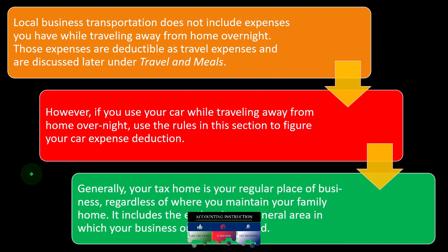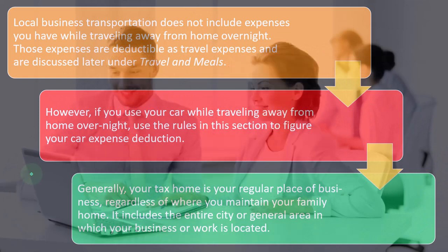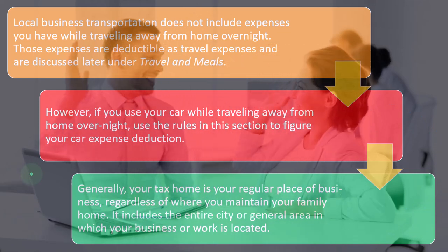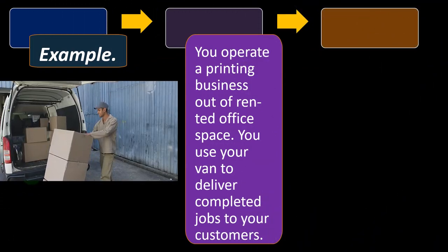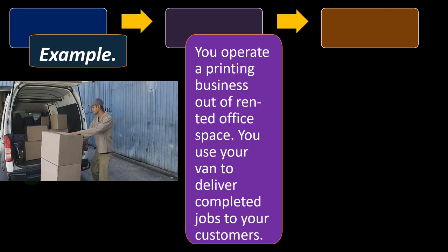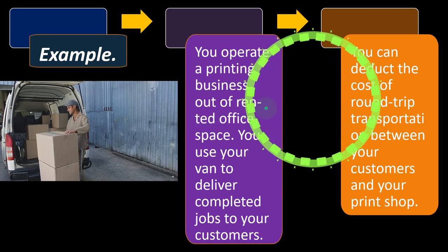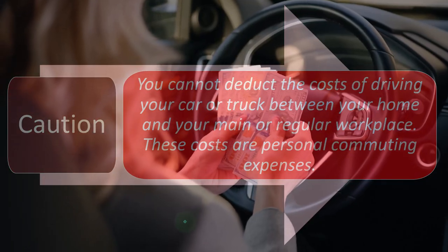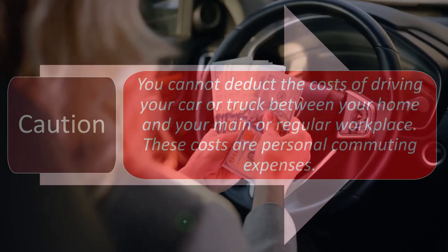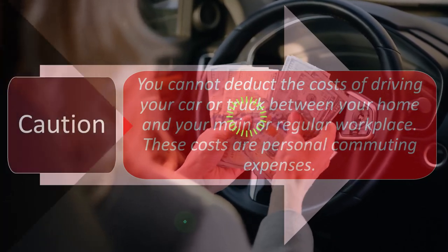Generally, your tax home is your regular place of business, regardless of whether you maintain your family home. It includes the entire city or general area in which your business or work is located. Example: you operate a printing business out of a rented office space and use your van to deliver completed jobs to your customers. You can deduct the cost of round-trip transportation between your customers and your print shop. Caution: you cannot deduct the cost of driving your car or truck between your home and your main or regular workplace, because those are personal commuting expenses.